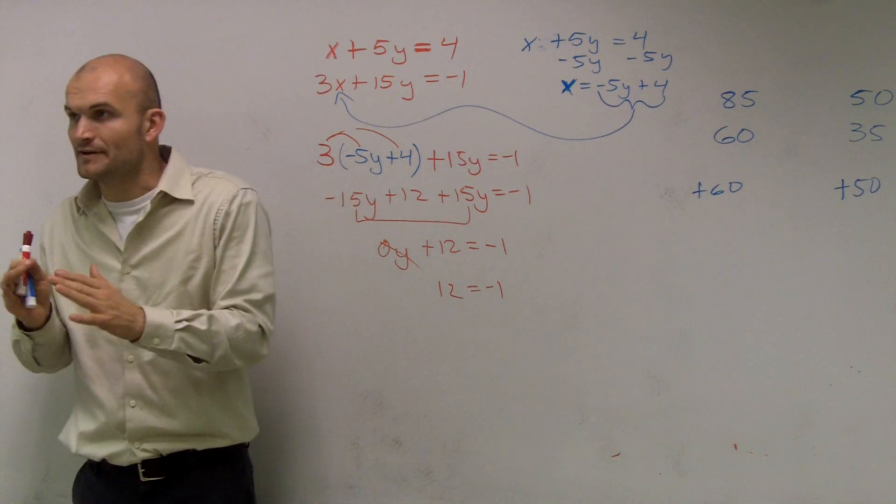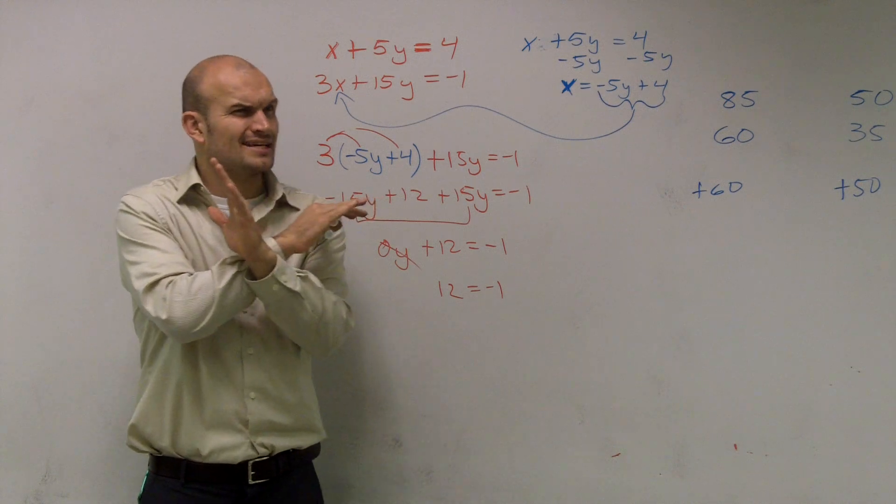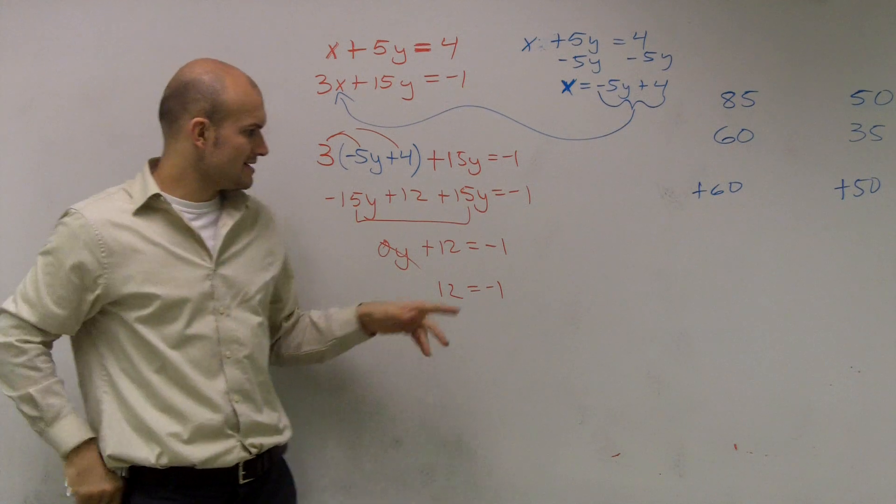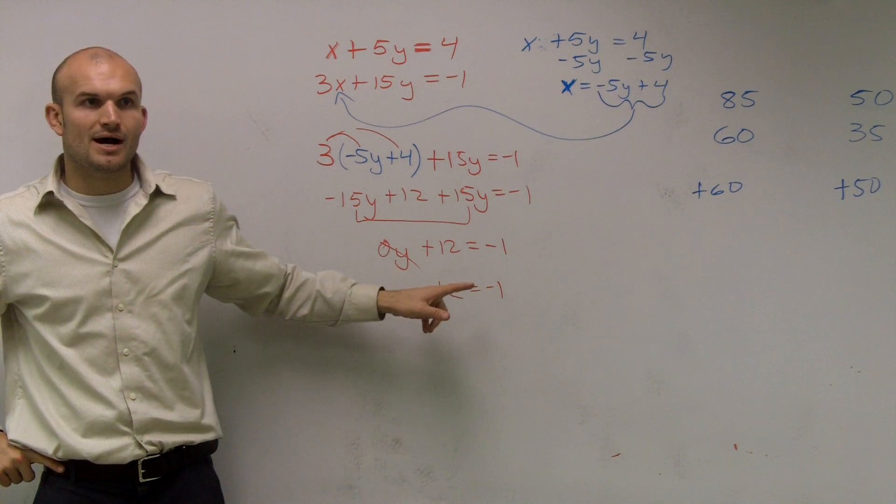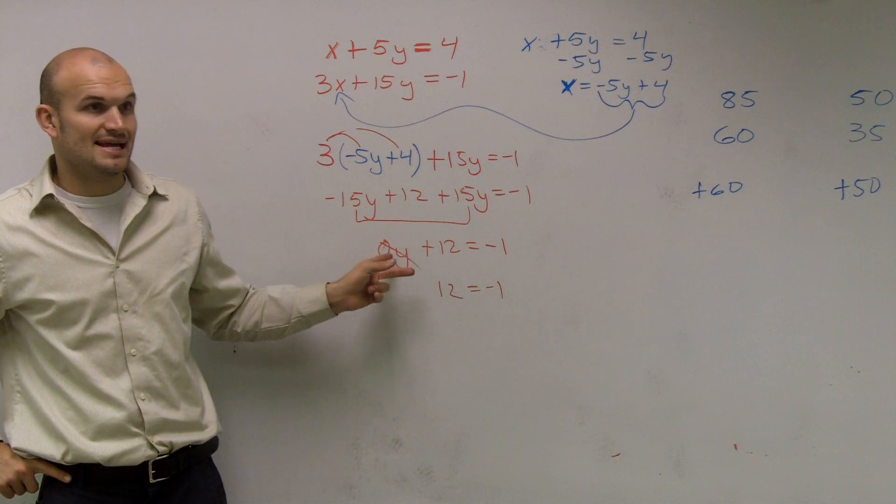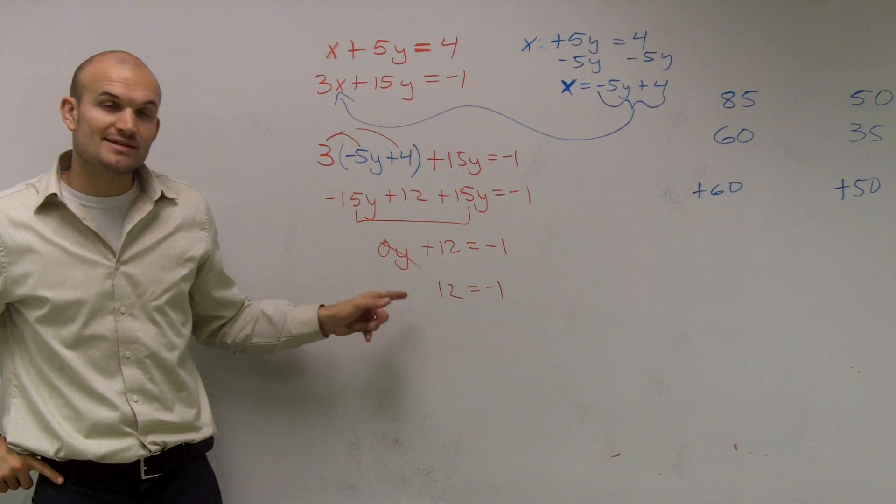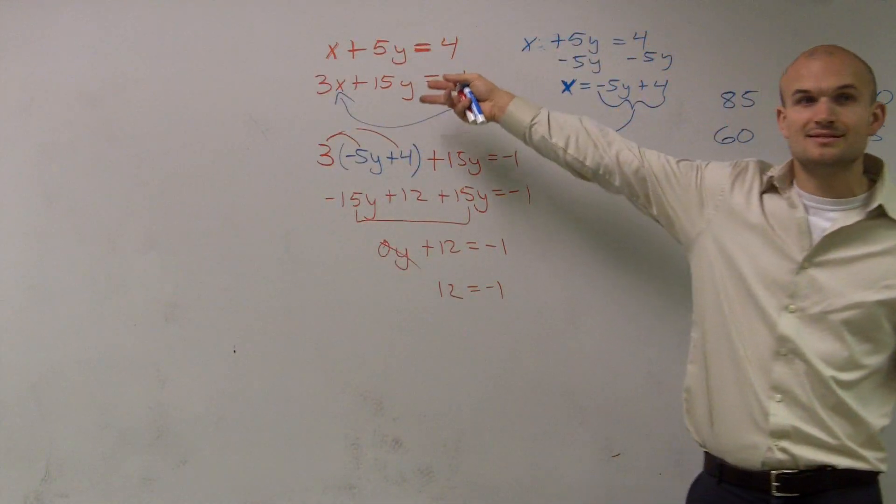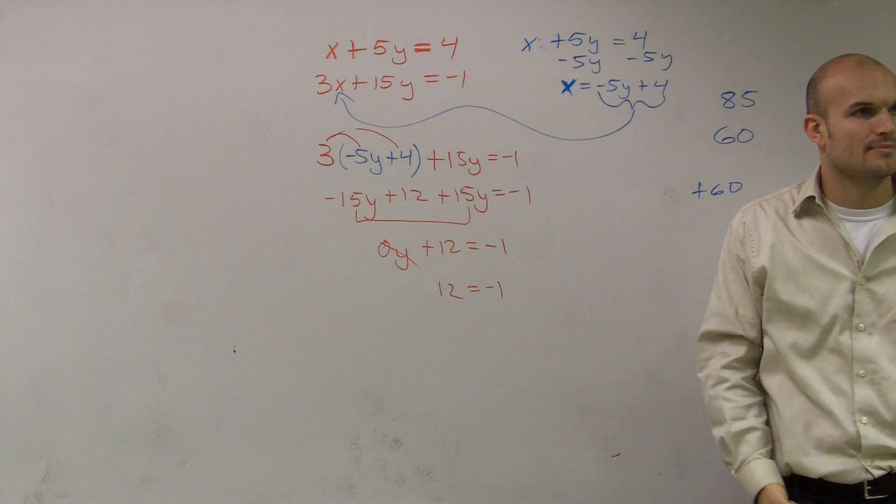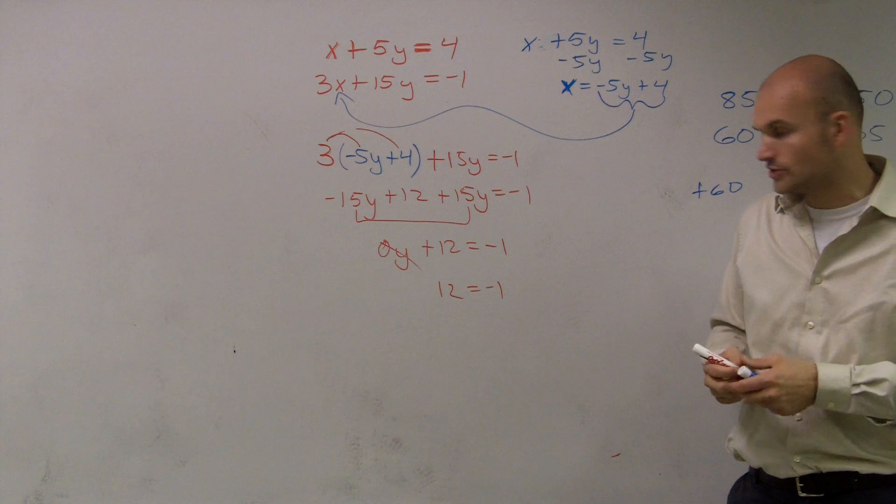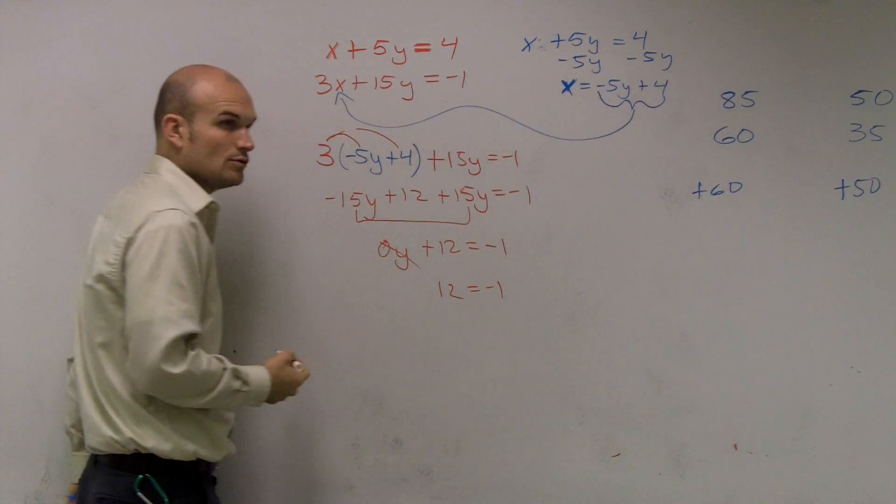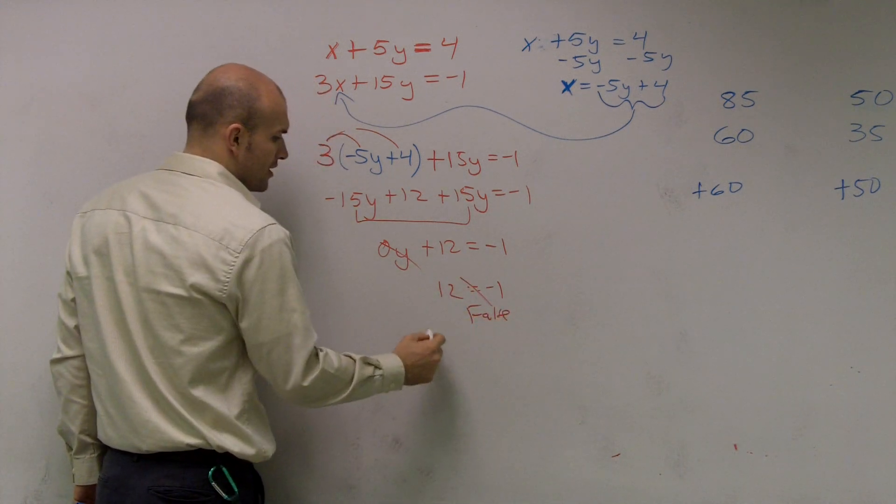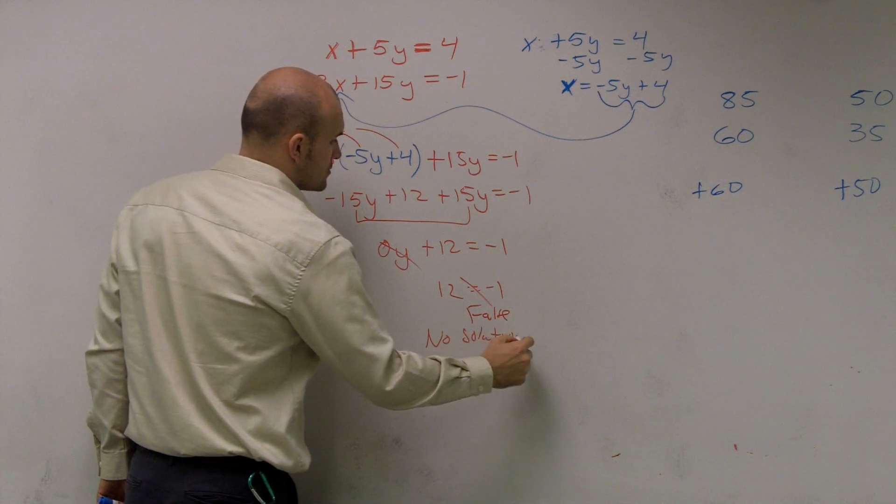So, if we were to think about this with graphing, remember, guys, the system, the solution is where the two lines intersect. There's an x coordinate and a y coordinate, correct? Well, if you guys look at here, can we solve for x or solve for y? No. Our y's and our x's canceled out. It got multiplied by 0. So, guess what? These two lines don't have an intersection point. So, this is what we call no solution. And also, you can tell that because 12 does not equal negative 1, does it? That is false. So, therefore, this is no solution.